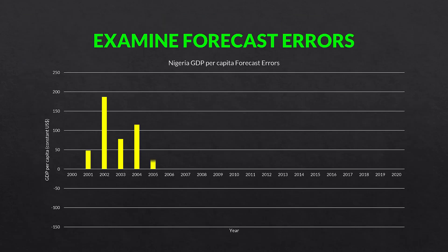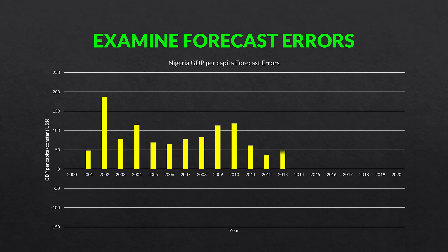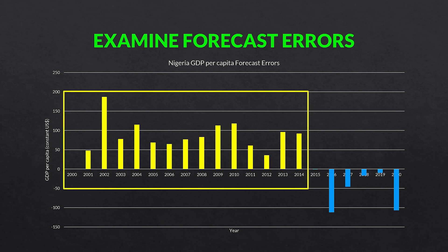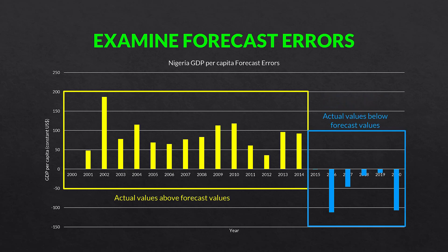Always examine your forecast errors. Here is a graph of the forecast errors from that previous slide. We can see that the first two thirds are positive, and then the last third or so are negative. In the first part, the actual values are above the forecast values because the naive forecast cannot keep up with changes in the slope of the graph. The opposite is true on the right — the actual values are below the forecast values.